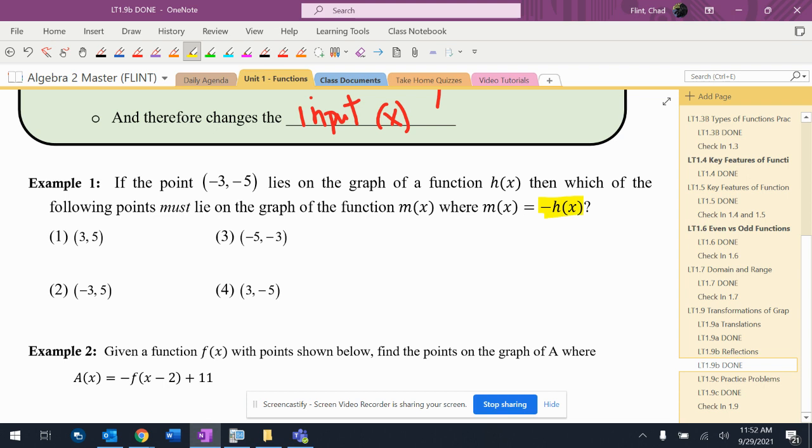The point (-3, -5) lies on the graph of a function h(x). Then which of the following points must lie on the graph of the function m(x) where m(x) equals negative h(x)?